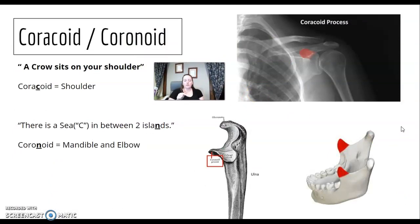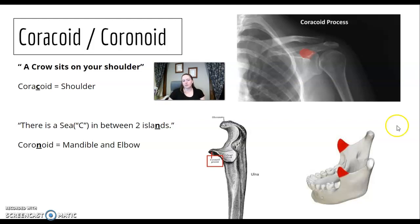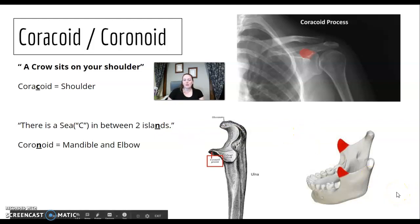Coracoid versus coronoid — know the difference. For coracoid, I remember it as a crow sits on your shoulder, so the coracoid with a C is up on the shoulder. There's a 'noid' in the mandible and a 'noid' in the elbow for coronoid. The crow-sits-on-the-shoulder mnemonic works well, or you can simply memorize the terms.